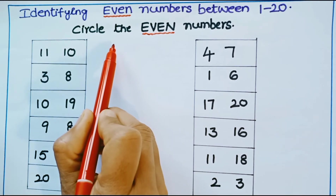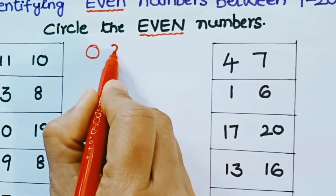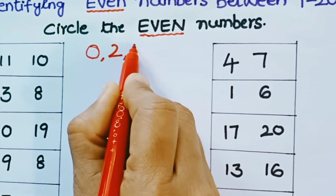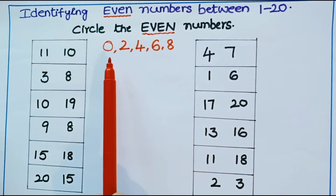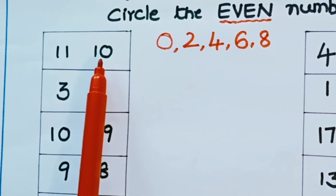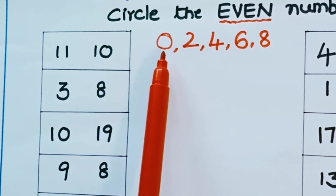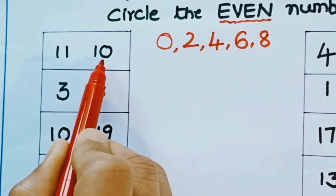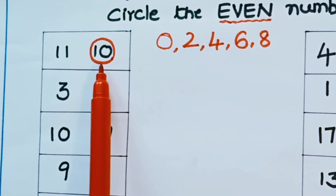Even numbers end with 0, 2, 4, 6, 8. If there are two-digit numbers, we look at the ending digit. In 10, the ending number is 0. Is 0 odd or even? It is an even number. So 10 is an even number. Let us circle 10.